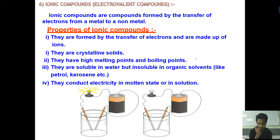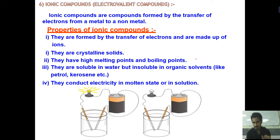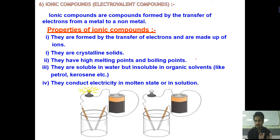Now let us talk about the ionic properties of electrovalent compounds. What are ionic compounds? Generally, ionic compounds are compounds formed by the transfer of electrons from a metal to a non-metal. The salt we just formed is an ionic compound. They are formed by the transfer of electrons and are made up of ions — positive or negative — they are composed of ions. For example, sodium was a positive ion and chlorine was a negative ion, so they merged.